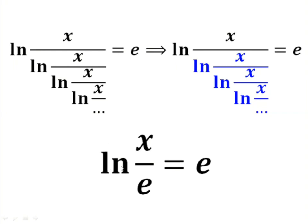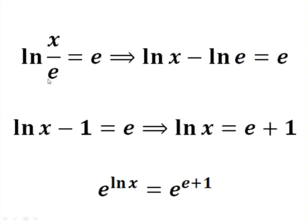So our equation becomes ln of x all over e equals to e. So ln of x over e equals to e, but ln a minus ln b equals to ln of a over b. So ln of x over e equals to ln x minus ln e equals to e.